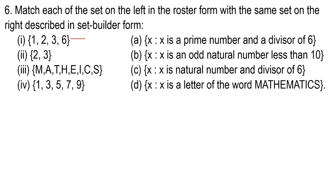The first one is {1, 2, 3, 6}. Option A is x is a prime number. Option B is x is an odd natural number. Option C is x is a natural number and divisor of 6. 1, 2, 3, 6 are natural numbers and divisors.